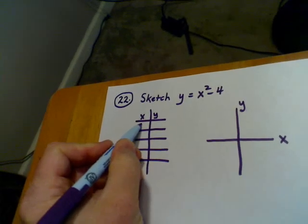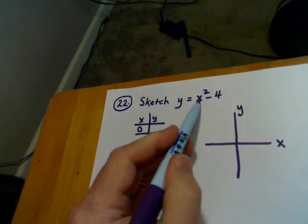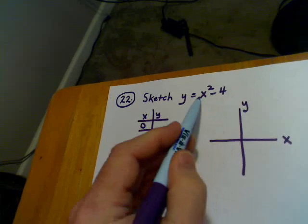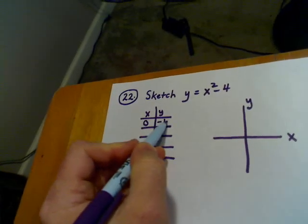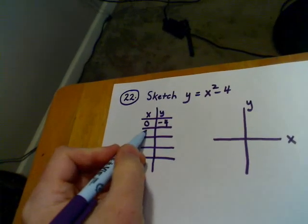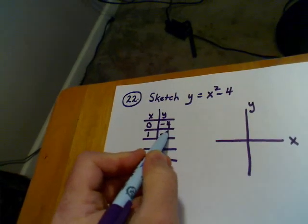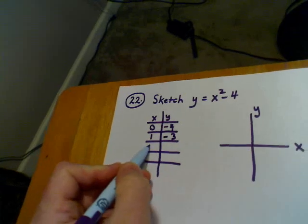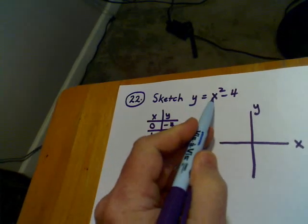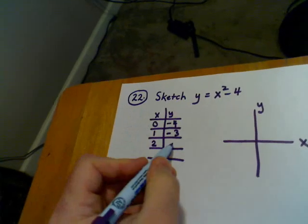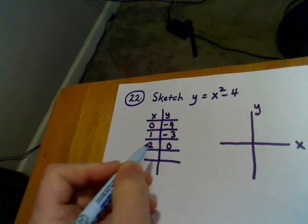I would pick a value for x like 0. If I put a 0 in for x, we come out with negative 4 for y. Let's put in a 1. 1 squared is 1, 1 minus 4, negative 3 for y. Let's put in a 2. 2 squared is 4, 4 minus 4 is 0.